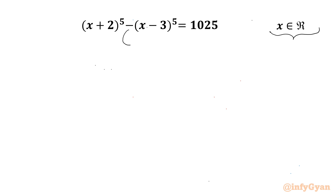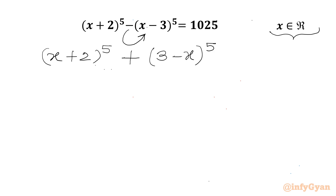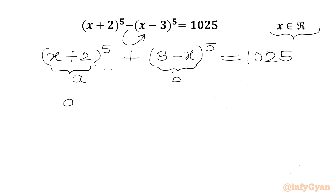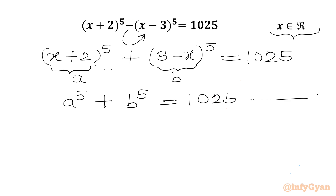Let us get started by considering this minus sign into the bracket. So I can write (x+2)⁵ plus (3-x)⁵ equals 1025. Now we will consider our substitutions. Let us say x+2 equals a and 3-x equals b. So the very first equation I can write is a⁵ plus b⁵ equals 1025 — equation number 1.